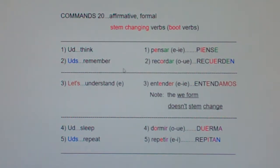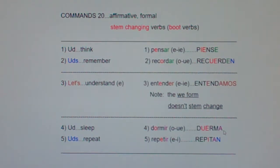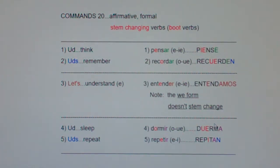Now, notice up here, pensar is an AR verb. AR verbs turn into E, opposite vowel. ER verbs, the E turns into A. And IR verbs, the I turns into A. Remember that chant? A turns into E, and E turns into A. A turns into E, and E turns into A.